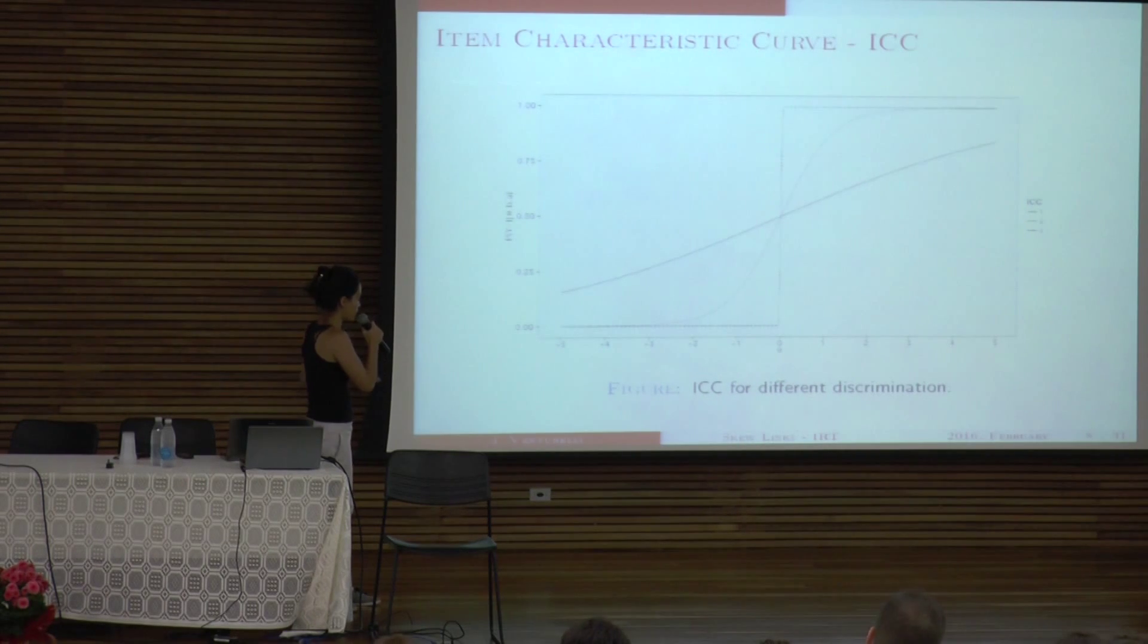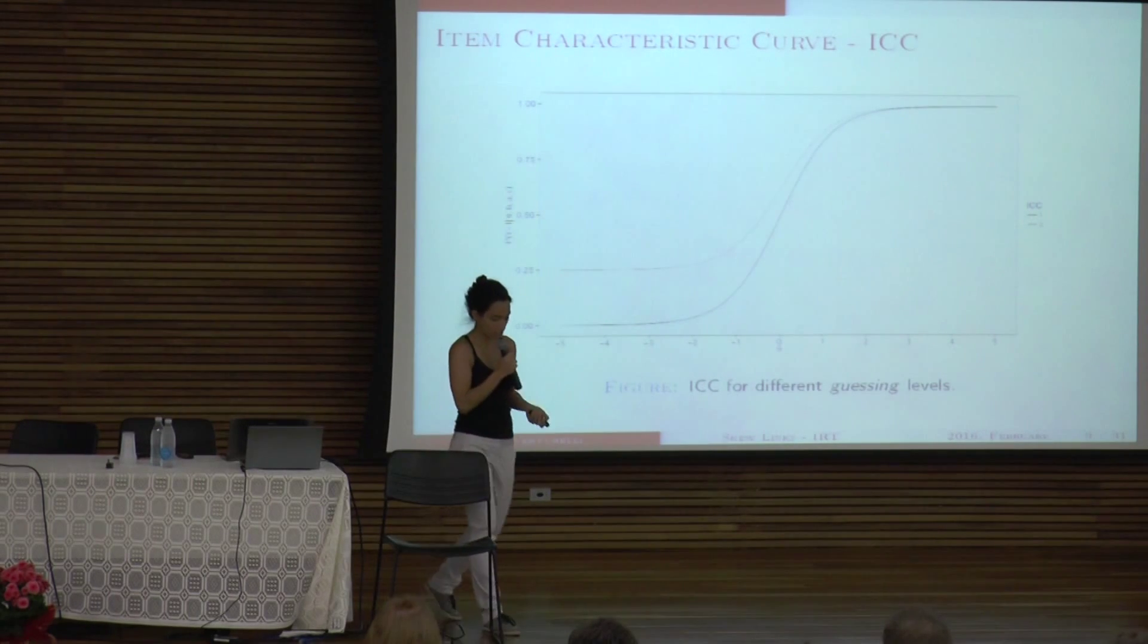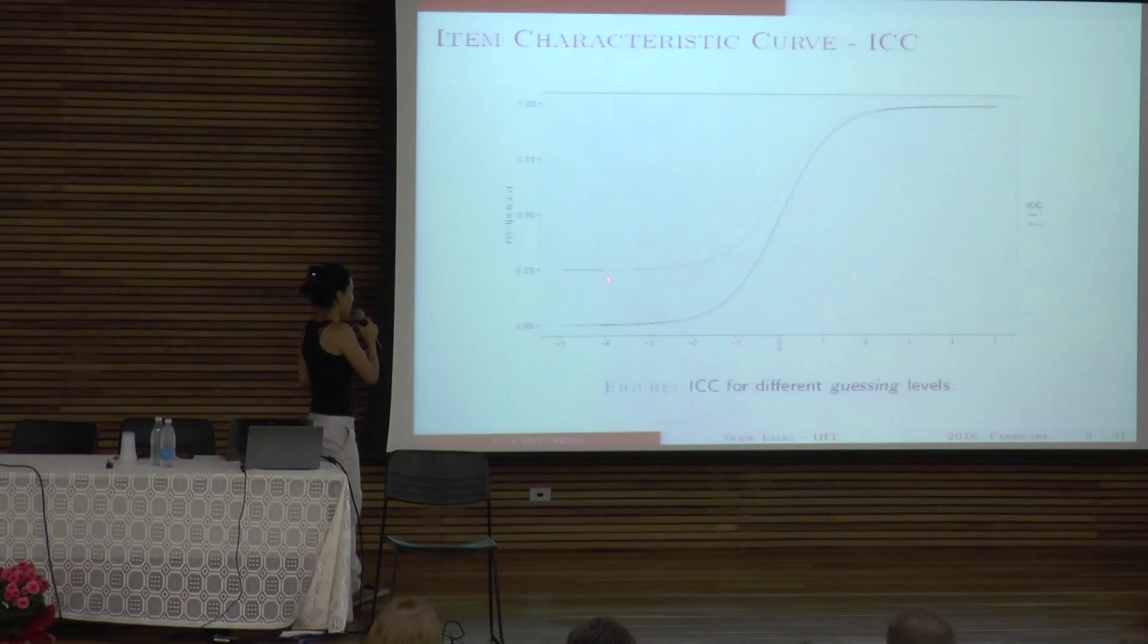And here I have three curves, and they differ from their discrimination power. So here I have a very, like a perfect item that discriminates between ability levels around this trait. So I'm sorry, I didn't explain this, but here on the X, I have the ability and the ability levels. And here I have the probability that a person at this ability to get the item right. And here is the guessing parameter, which gives me the probability that a person with a very low ability to get the item correct.